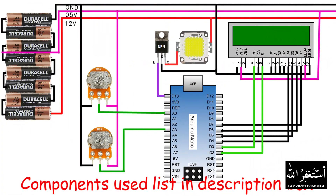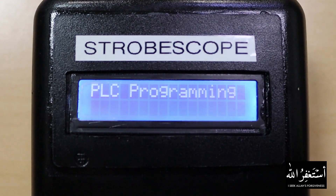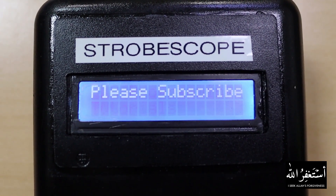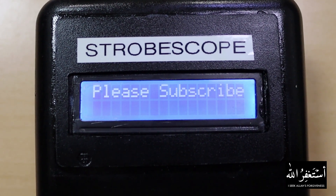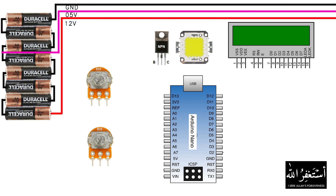Now let's see the wiring diagram to make a stroboscope. First we will connect all 1.5 volt batteries in series to make 12 volt and 5 volt DC lines. So now we have 5 volts to power the Arduino and 12 volts to drive the stroboscope light.